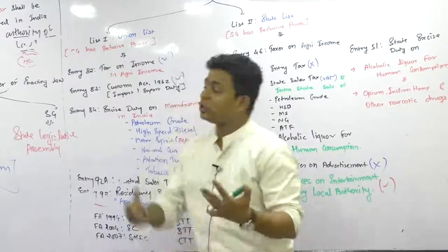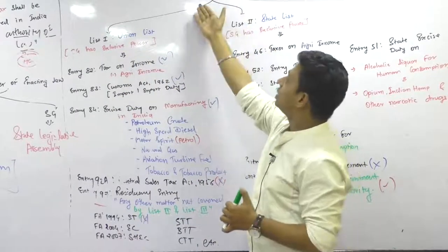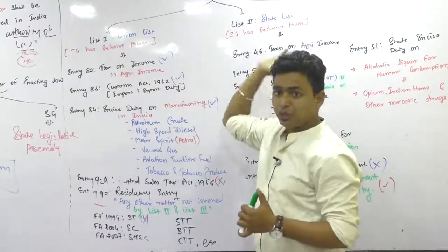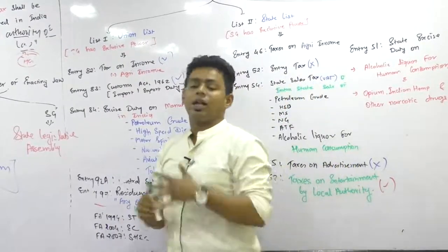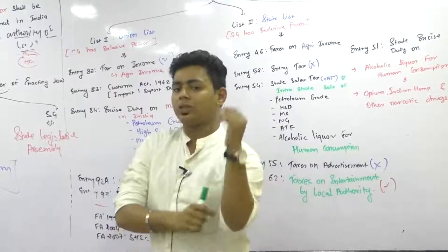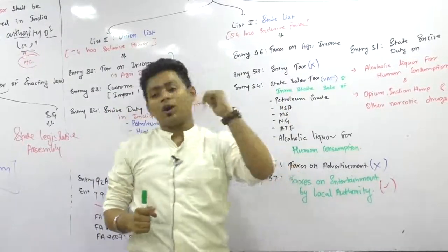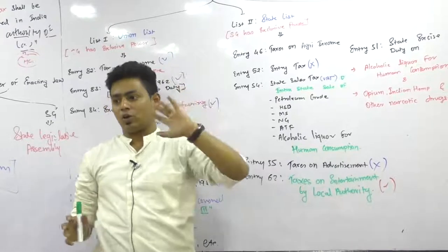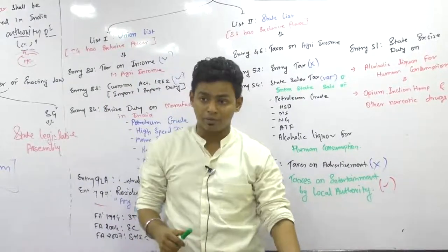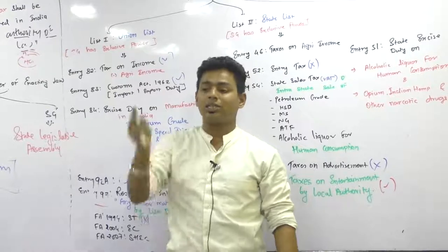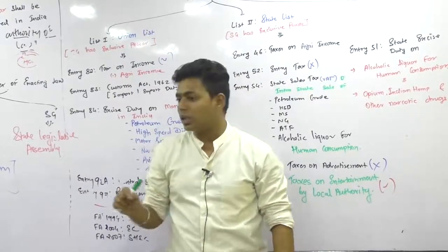Yes, for that you should understand Article 246 and the 7th Schedule, which has three lists: List 1 - Union List, List 2 - State List, and List 3 - Concurrent List. Now the Concurrent List does not have any revenue law. This was an MCQ in CMA or CS exams. One of the lists doesn't have any revenue tax law, and that is the Concurrent List.